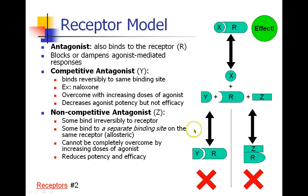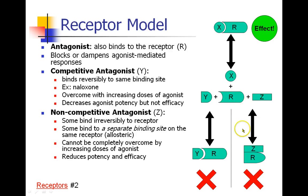There's also non-competitive antagonism. We're going to define this as either irreversible binding to the receptor, or binding to a receptor at a different binding site which causes some conformational change. So this is a drug binding to the receptor elsewhere, and when it binds, it takes away the agonist binding site — so the agonist couldn't overcome even if it wanted to. Or perhaps the drug binds irreversibly and is a one-way street. These are drugs that reduce both potency and efficacy.